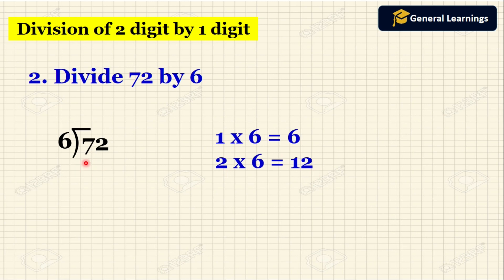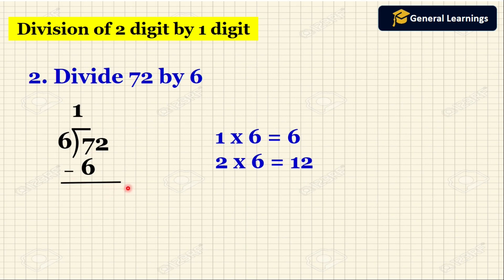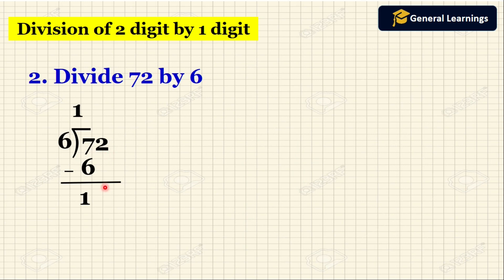But this dividend, which is 7, is not coming in the table of 6. In that case, we are going to take the number which is less than 7. So we take 1 six is 6. We write this 1 above, and then write the product 6 below 7, draw a line, and then subtract. When we subtract 7 minus 6 we get the answer as 1.